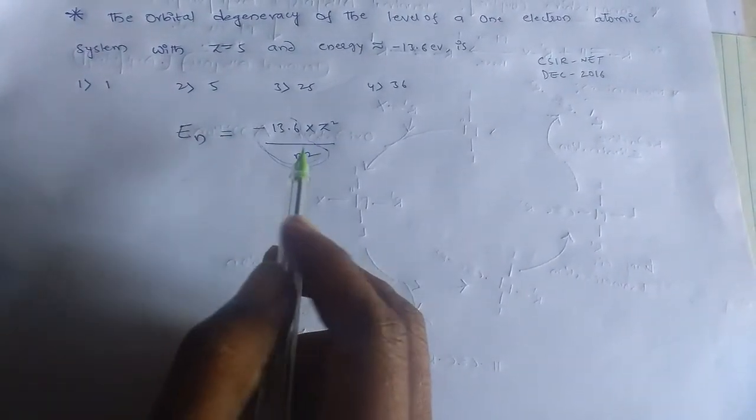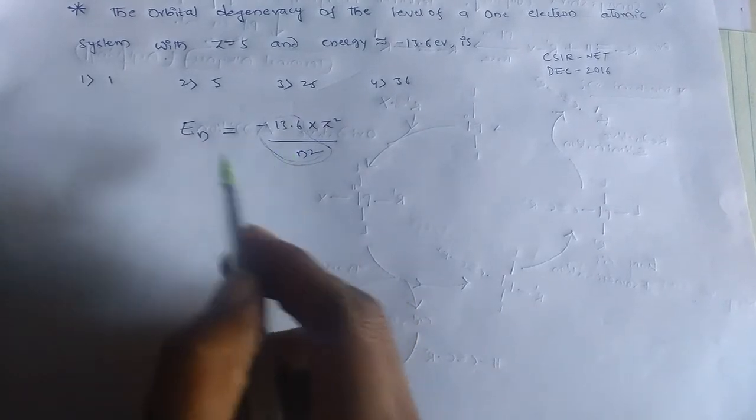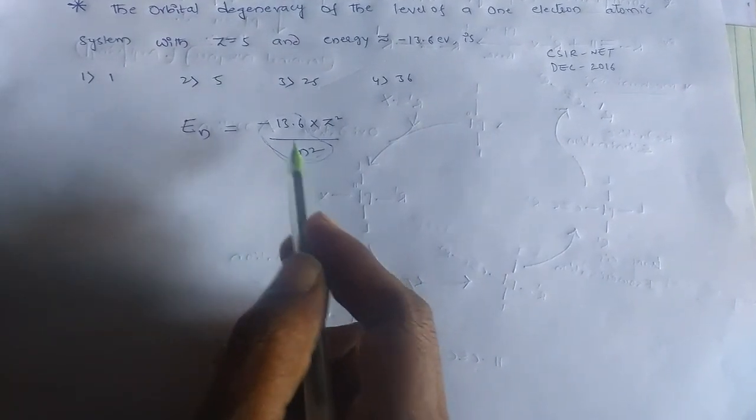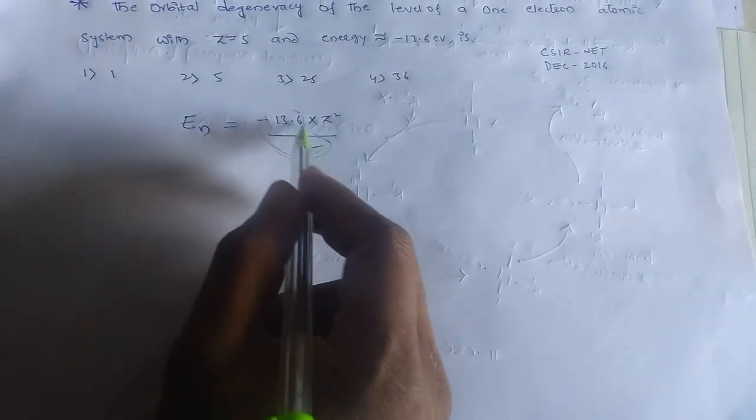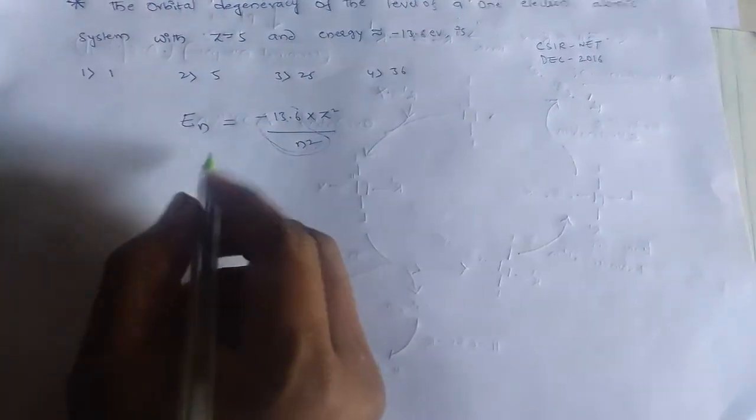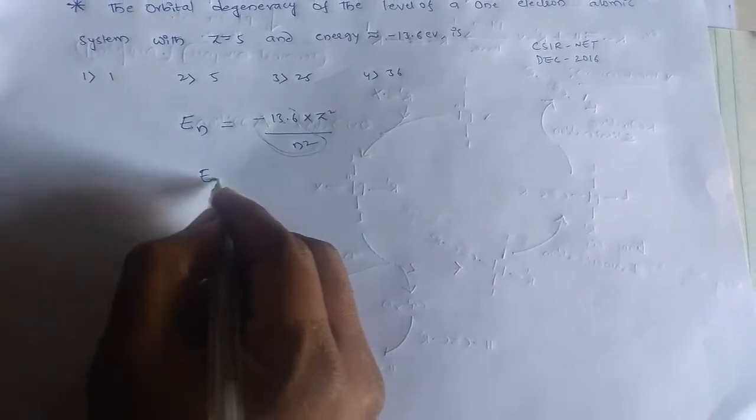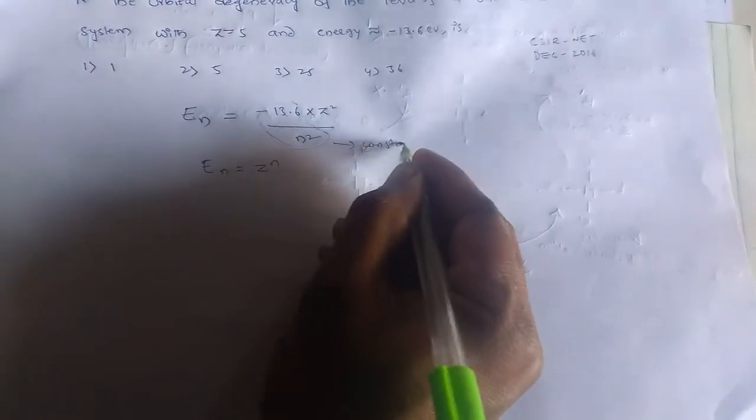So we have the primary formula for this. I am giving here the shortest one. So minus 13.6 and n squared, these two are constant values. So then we have En equals Z squared. So these are constant if we consider.